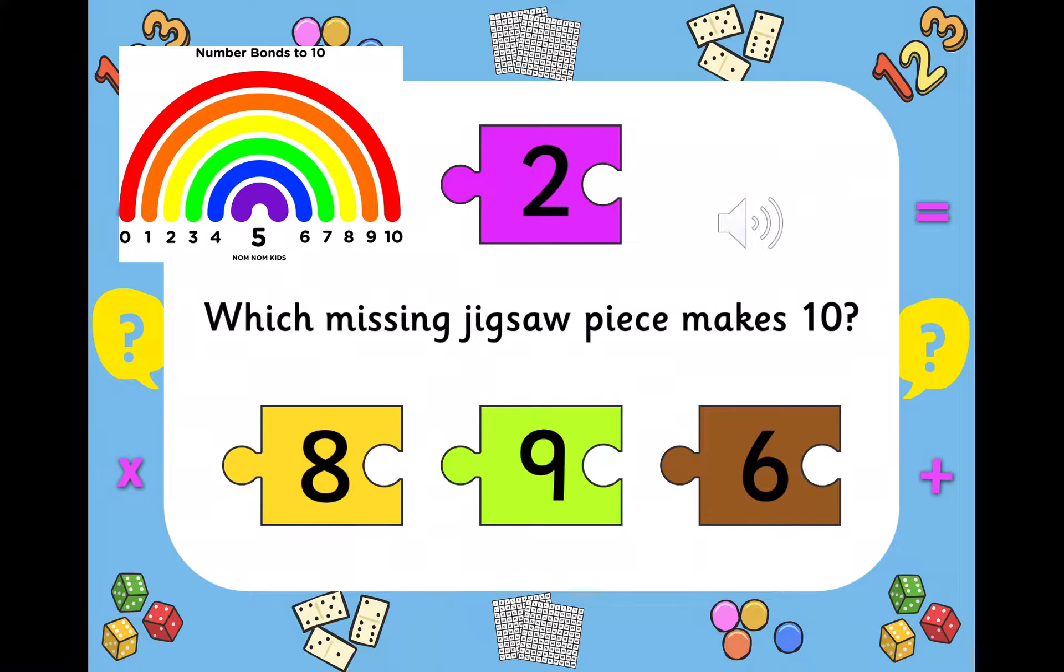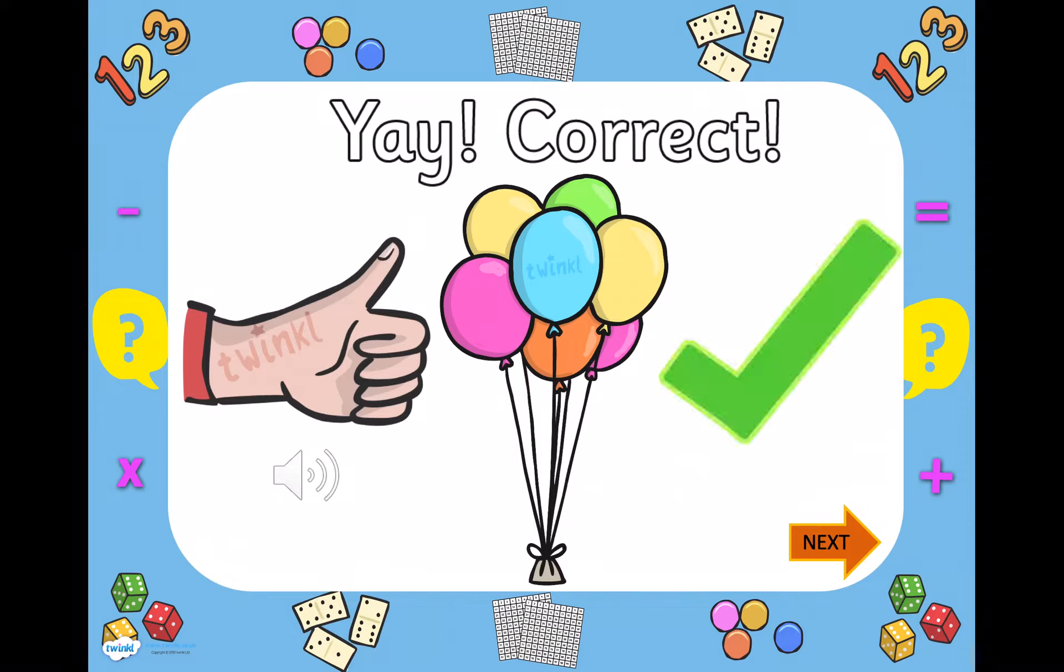Alright, number 2. Remember, if you're finding this tricky, look at the rainbow. Find the number 2 on the rainbow and follow that yellow arch all the way around. Where does it take you to? Does the yellow take you to 9? Mm-mm. It doesn't take you to 6. Oh, it must be 8. If you got it right this time, you should do 10 jumping jacks or 10 star jumps. They're the same thing.